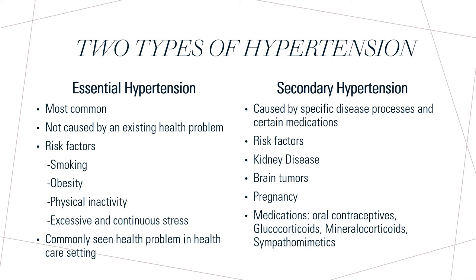Hypertension can be categorized by two types: essential hypertension and secondary hypertension. Essential hypertension is more common of the two and is the most commonly seen health problem in the healthcare setting. Essential hypertension is not caused by an existing health problem. Instead, it is caused by unmodifiable risk factors like genetics and modifiable risk factors such as smoking, excessive continuous stress, physical inactivity, and obesity.